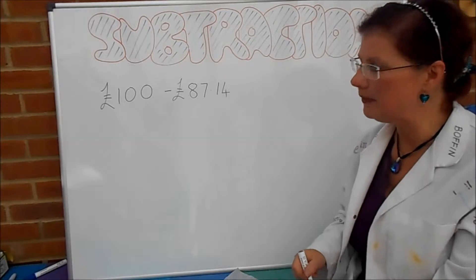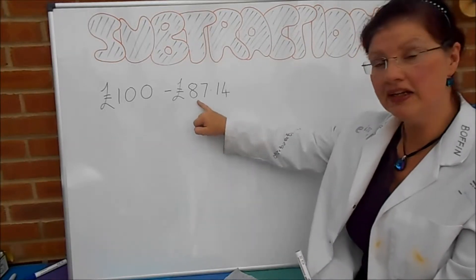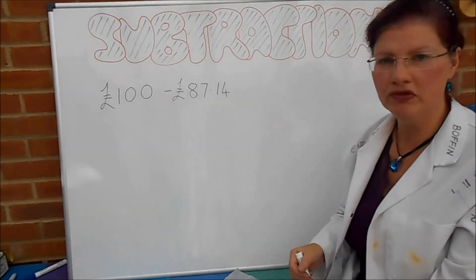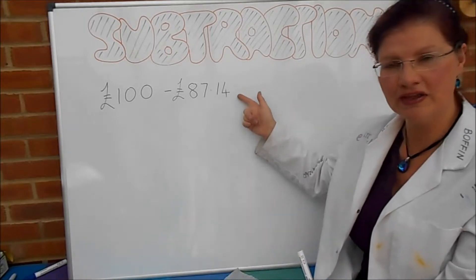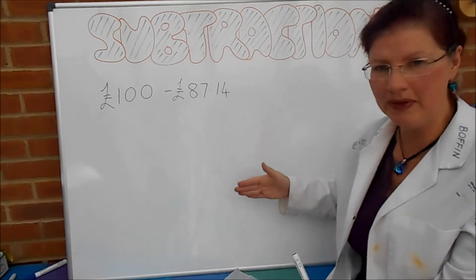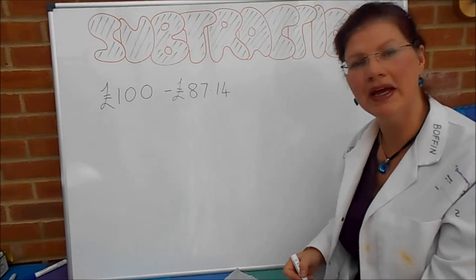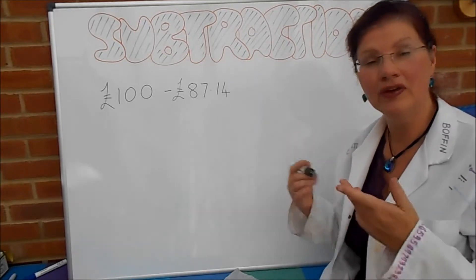So, just as a recap, imagine that you bought something for £87.14 and you paid for it with £100. And what we're going to do is start with our £87.14 and we're going to add on bits until we get to £100. And then the bits that we add on, that's the change.